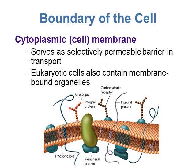Under the glycocalyx and the cell wall, if the cell has a cell wall, you have your cytoplasmic or cell membrane. This has the same basic composition as a cell membrane in a prokaryotic cell — it serves as a selectively permeable membrane, allowing some things to move across while preventing others. Eukaryotic cells also have cell membranes making up their organelles, so they have a lot of membranes. The eukaryotic cell membrane has a fluid mosaic model with phospholipids, embedded proteins, and carbohydrates attached to phospholipids or proteins.